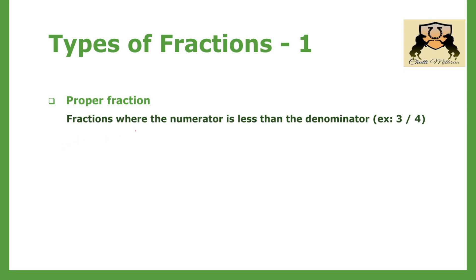Proper fractions: fractions where the numerator is less than the denominator are called proper fractions. For instance, 3 by 4 — since 3 is less than 4, it is a proper fraction.